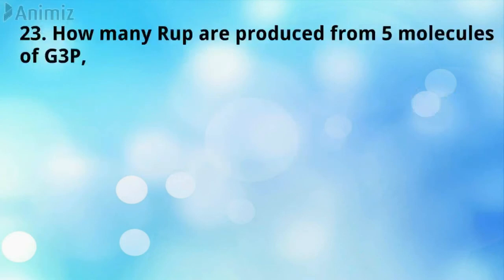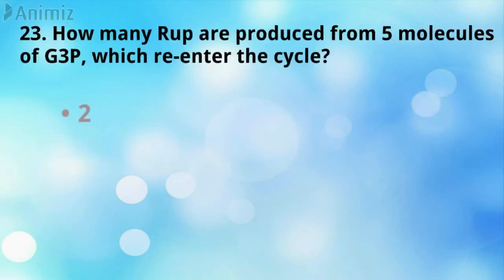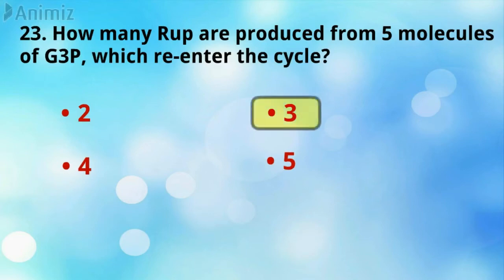How many RuBP are produced from five molecules of G3P which re-enter the cycle? 3 is the correct answer.